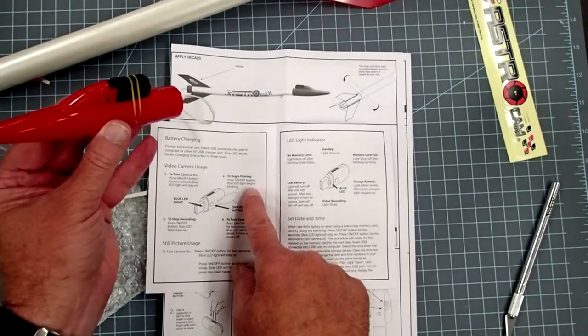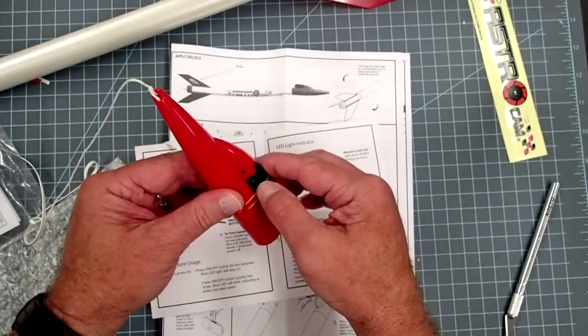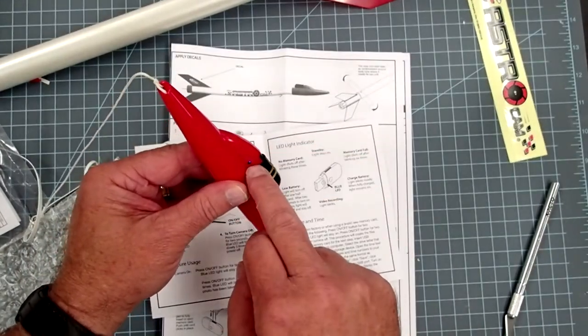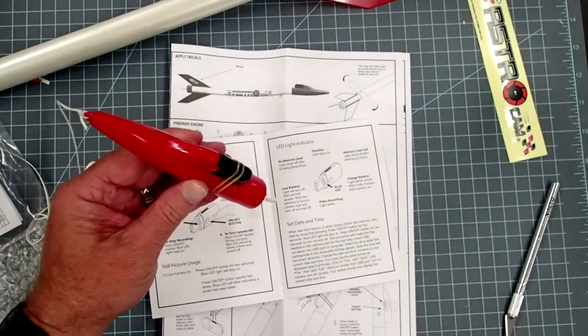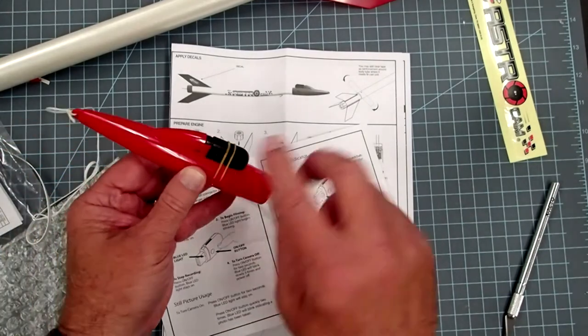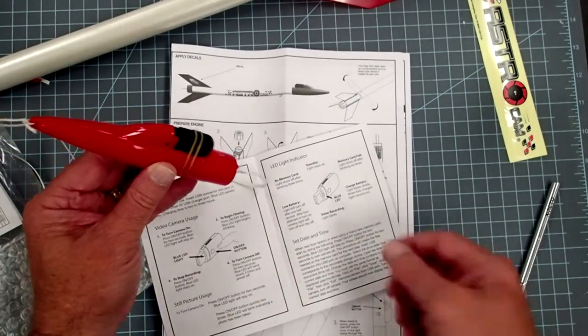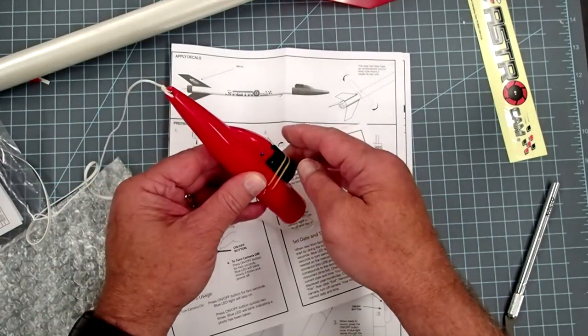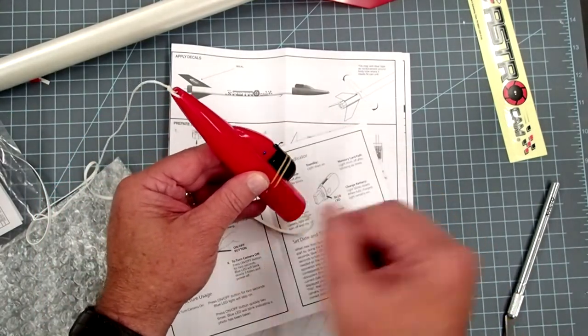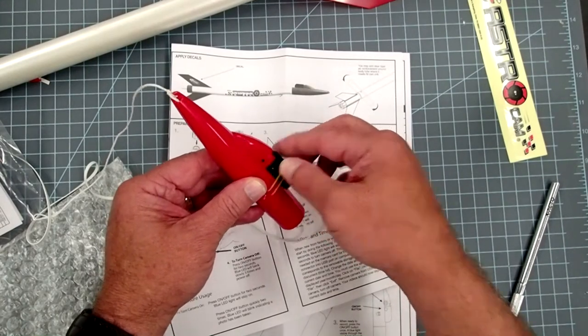And so to begin filming, you simply press this once, and as this is blinking, it is filming whatever's going on. And so presumably, you're going to have this all assembled on the launch pad before you press that button. And then to turn the camera off again, simply press the button once more, blue light comes on, and then press and hold to turn it off.